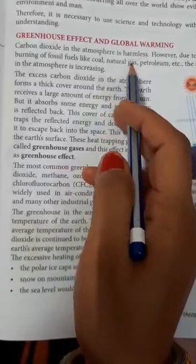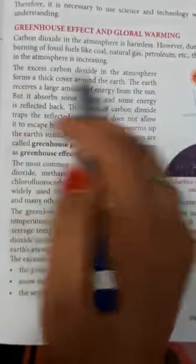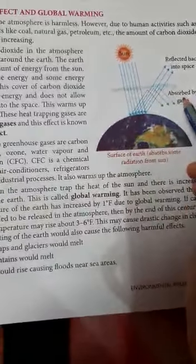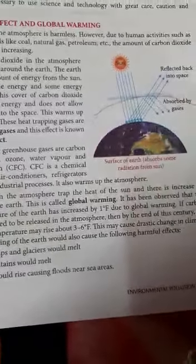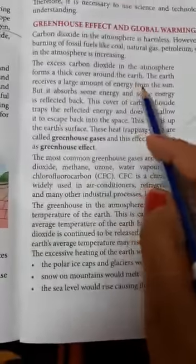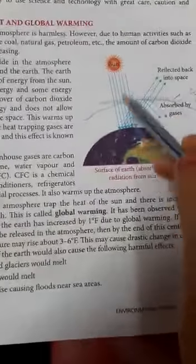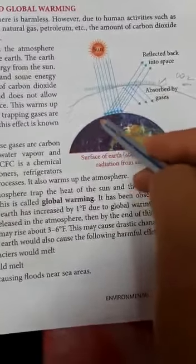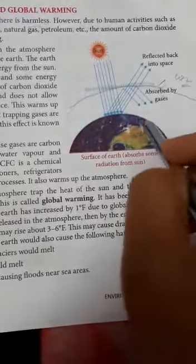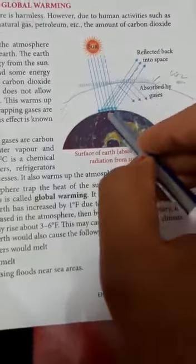The excess carbon dioxide in the atmosphere forms a thick cover around the earth. Our earth is surrounded by a layer of air called the atmosphere, which contains oxygen and other gases. But when CO2 increases, it forms a thick cover around the earth. The earth receives a large amount of energy from the sun, which warms the earth during the day. The earth absorbs some heat, and when night comes and the sun is gone, the earth sends that heat back.